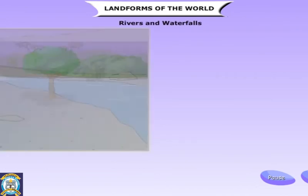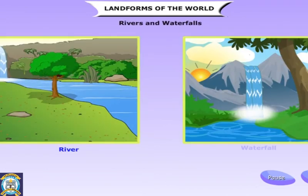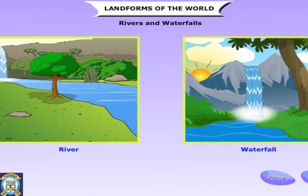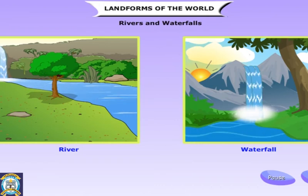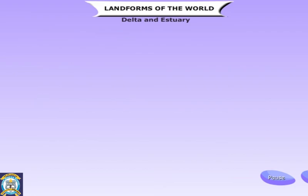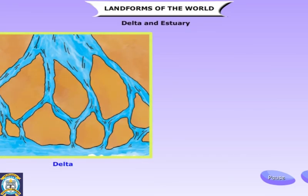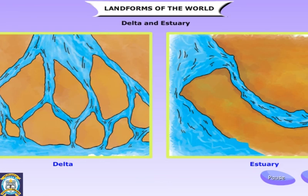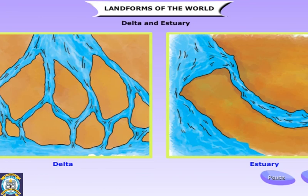Rainwater and melting snow from high mountains form small streams that start flowing down the slopes. They join and form bigger streams and rivers. During its course, a river sometimes falls from a great height, forming waterfalls. Before entering the sea or any other water body, the silt carried by the river stops its flow. This causes the river to break up into many small outlets and spread over a wider area known as a delta.